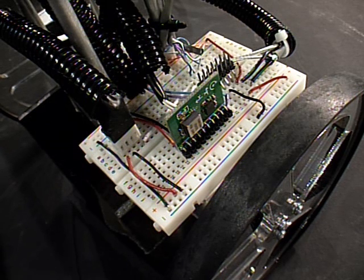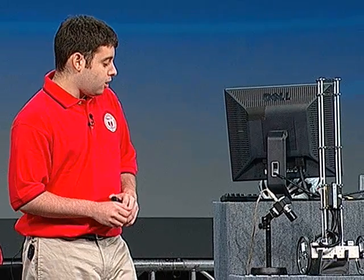Data from an inclinometer and a gyroscope are fused together in software to generate a very high bandwidth measurement of the system's tilt. Additionally, optical encoders mounted on each motor shaft measure the system's position, velocity, rate of turn, and heading. Using an NI DAQ card and system ID techniques, we were able to refine our simulation model to make sure it accurately reflected the real-world hardware.